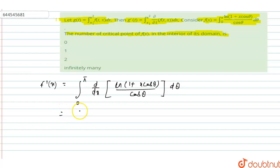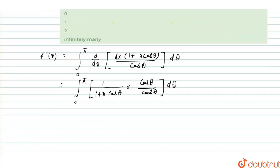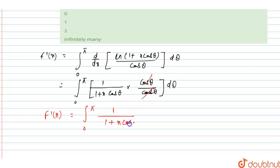Then limit 0 to π, d/dx: differentiating ln(1 + x cos θ) gives 1/(1 + x cos θ), and differentiation of x cos θ is cos θ, upon cos θ. So cos θ cancels out, and we have only 1/(1 + x cos θ) dθ.